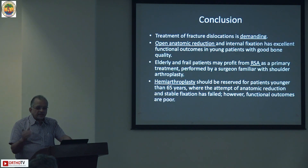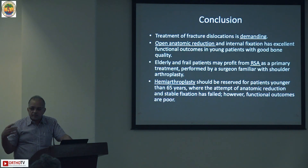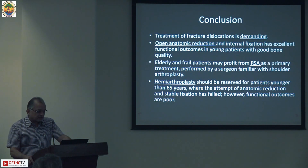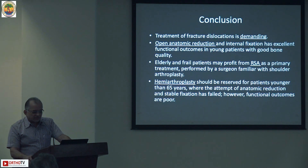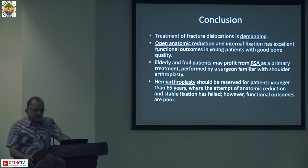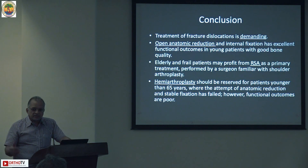In conclusion, treatment of fracture dislocation is demanding. Posterior dislocation is missed almost 30 to 40% of the time. Open anatomic reduction and internal fixation gives excellent functional outcome in young individuals with good bone quality. Elderly and frail patients may benefit from reverse shoulder as primary treatment, performed by a surgeon familiar with shoulder arthroplasty. Hemi-arthroplasty should be reserved for patients younger than 65 where anatomic reduction and stable fixation has failed; however, functional outcomes with hemi-arthroplasty in fracture dislocations are poor.